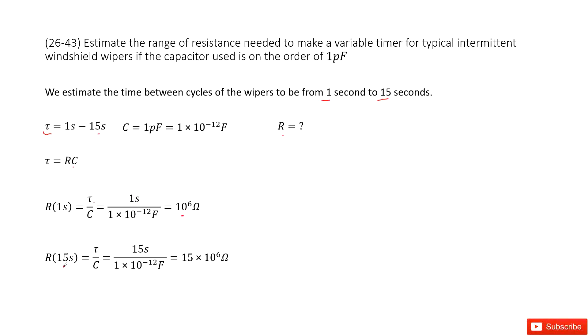In the second case at 15 seconds, R equals tau divided by C. This tau is 15 seconds, so R(15s) = 15s / (1×10^-12 F) = 15×10^6 ohms.